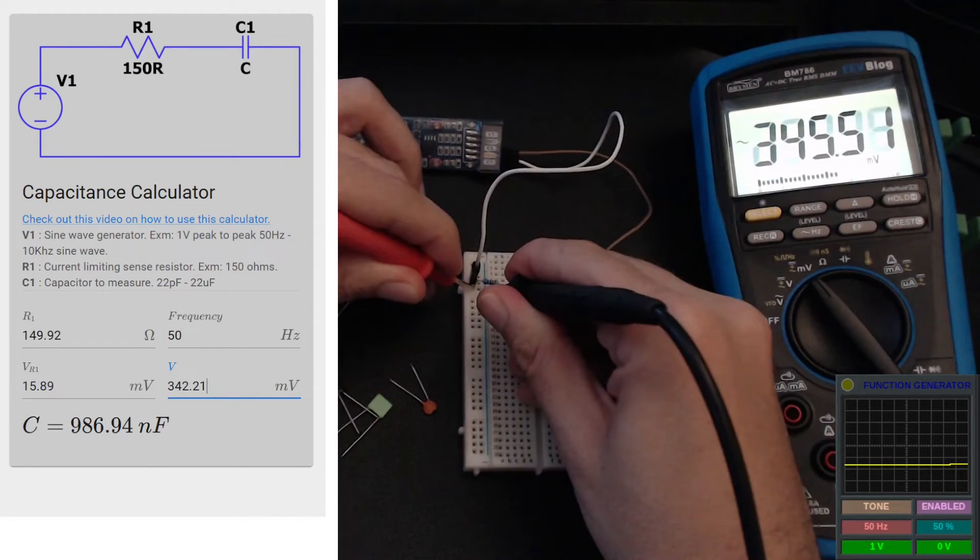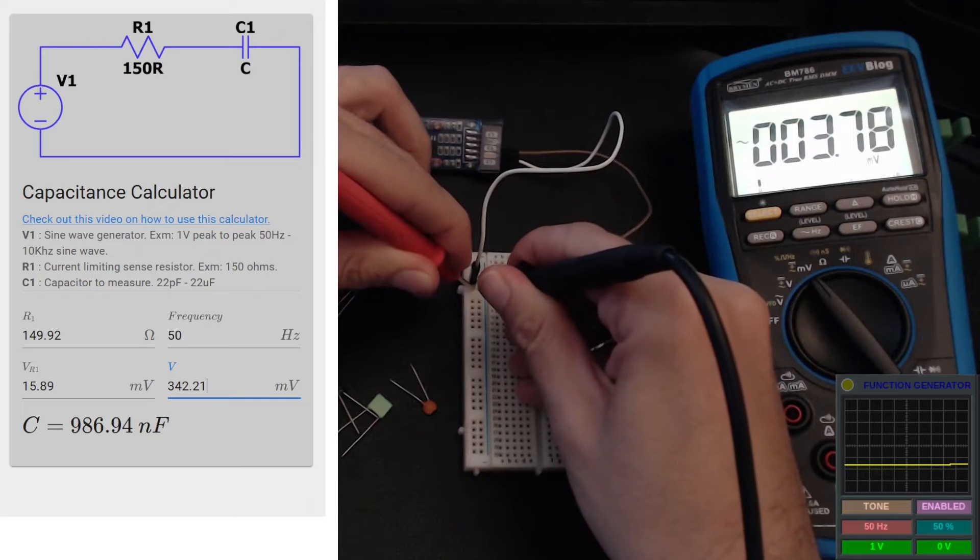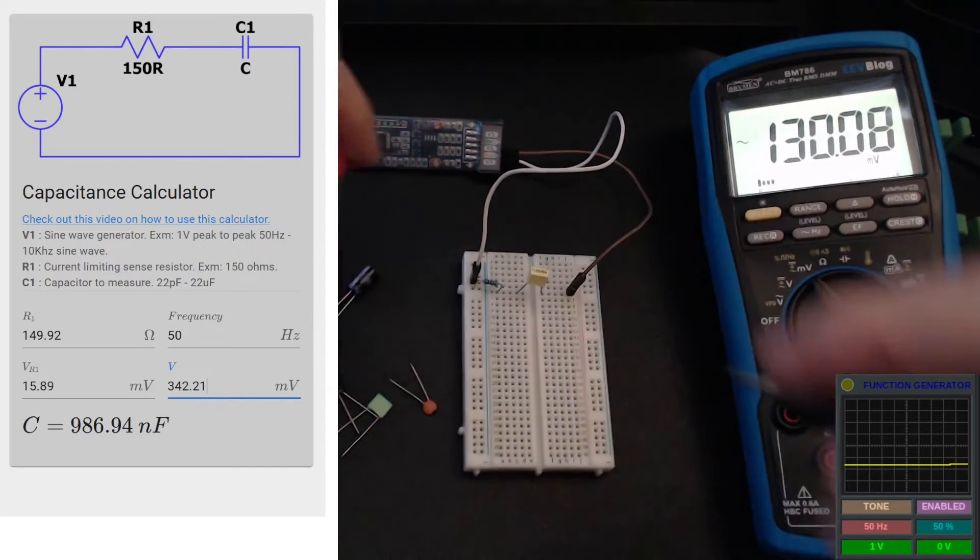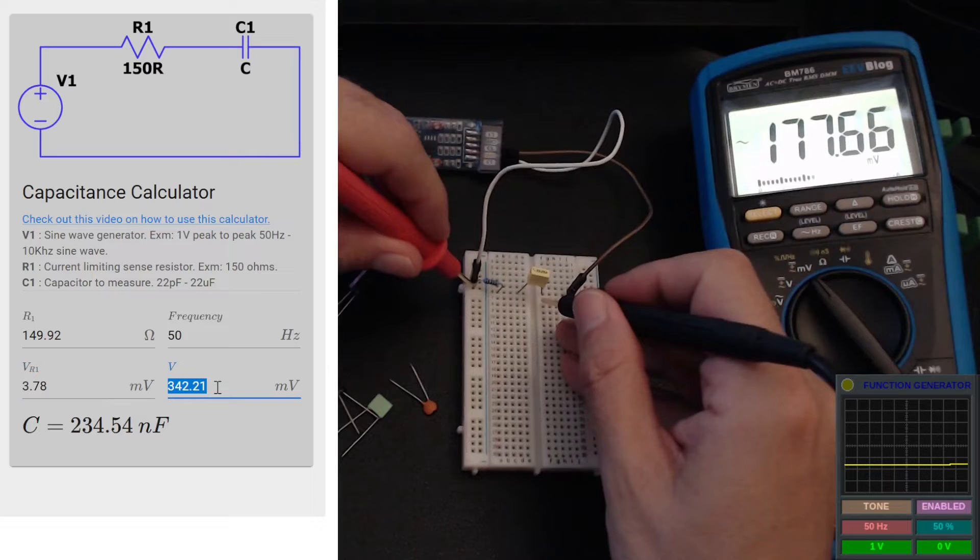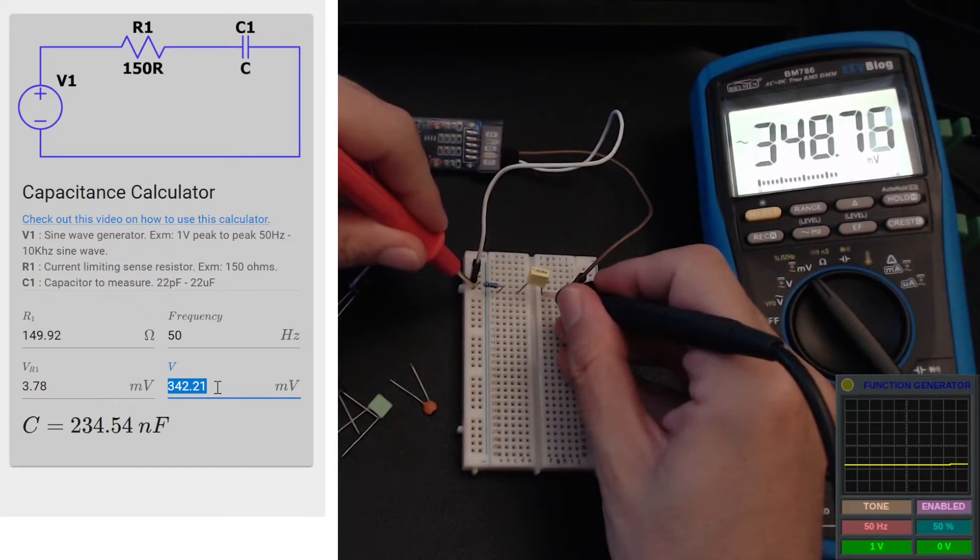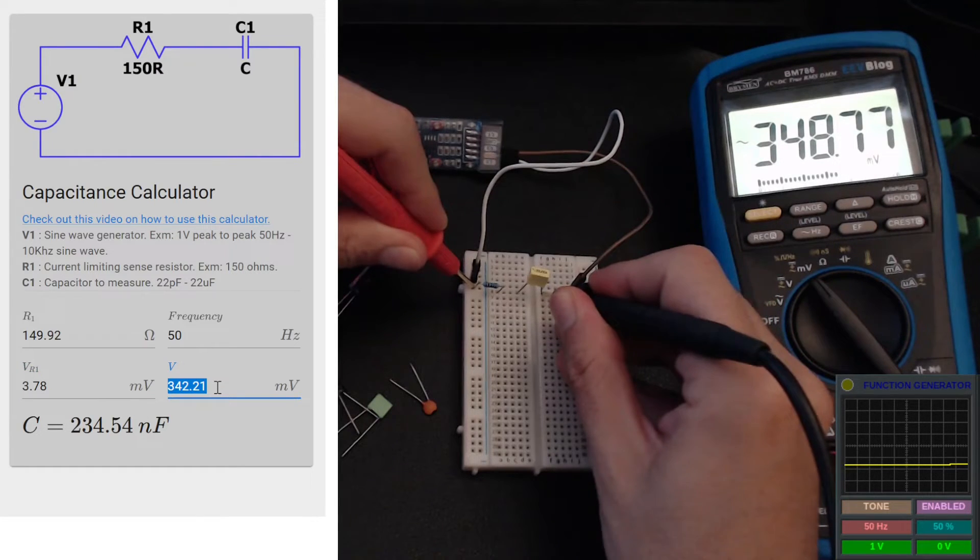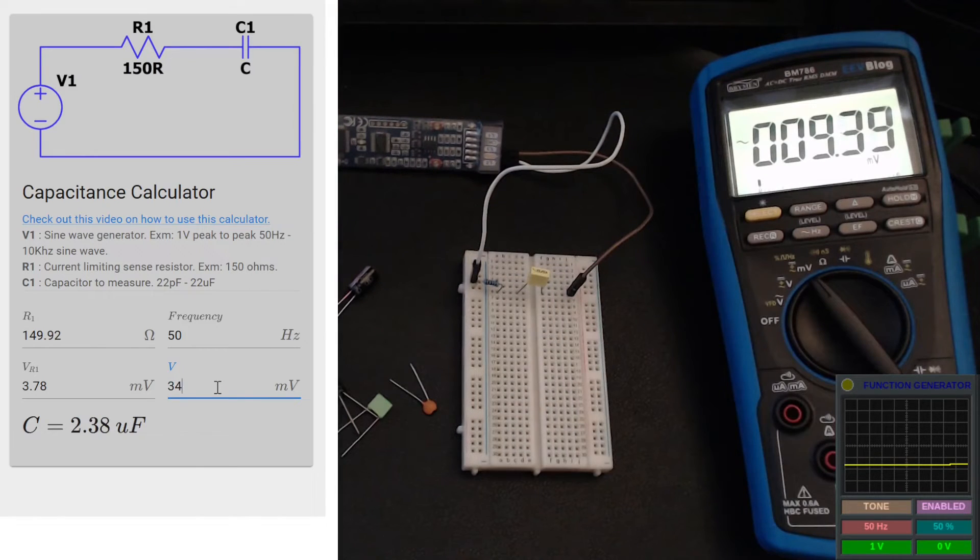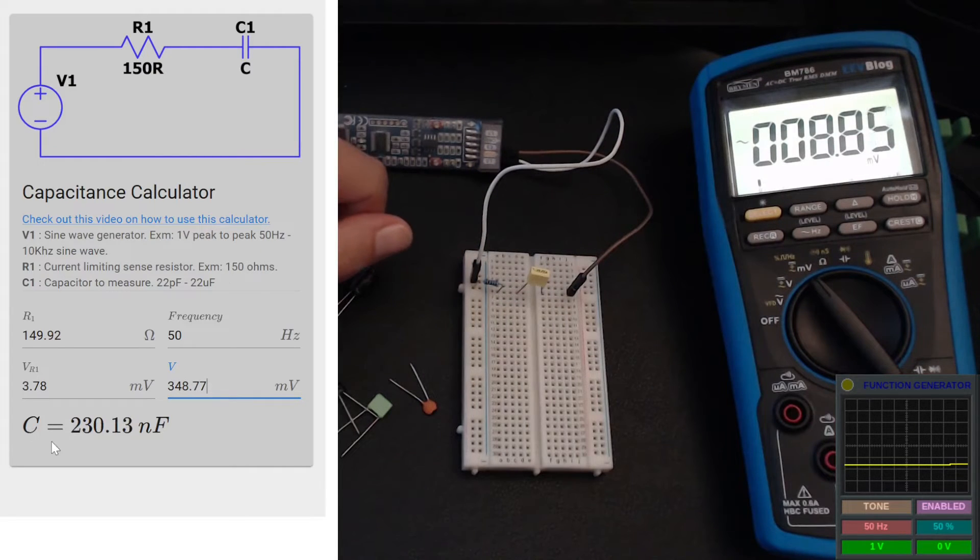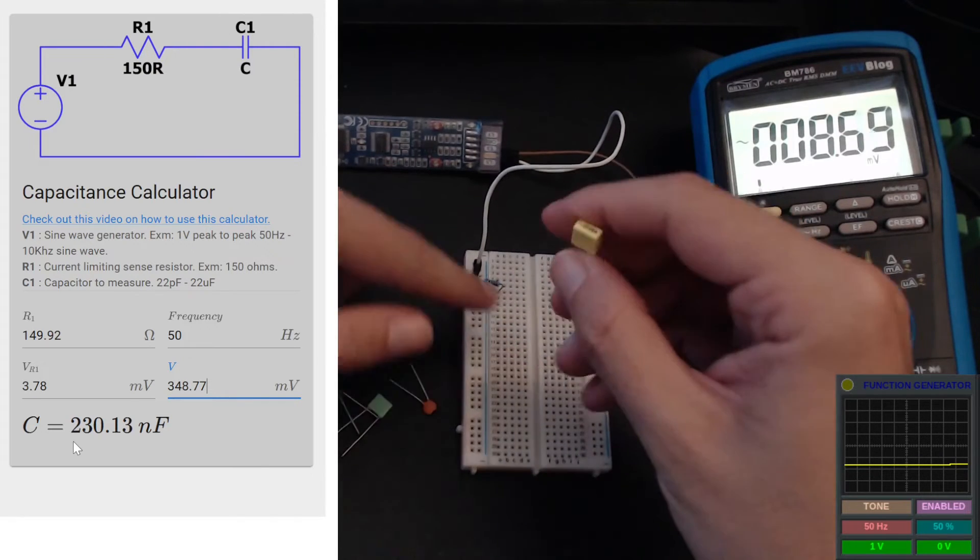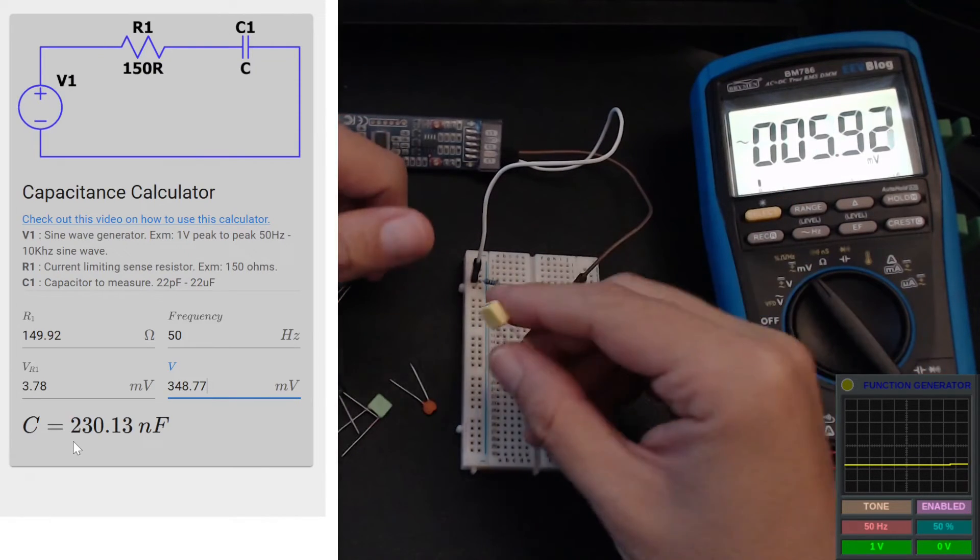Let's measure the voltage across our resistor - it's 3.78. Let's input that into our tool. Now we'll measure the voltage across both the resistor and the cap - 348.77. And we have 230 nanofarads on the tool, which is very close, within the component tolerances.